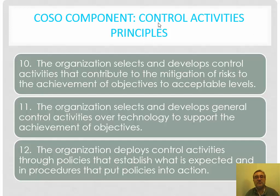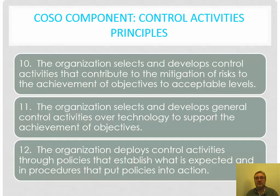Continuing with control activity principles: the organization selects and develops control activities that contribute to the mitigation of risk to acceptable levels — noting that we never reduce risk to zero, and organizations must be willing to accept some risk to survive in a competitive environment. The organization also selects and develops general control activities over technology to support the achievement of objectives, and deploys control activities through policies that establish what is expected and procedures that put policies into action.